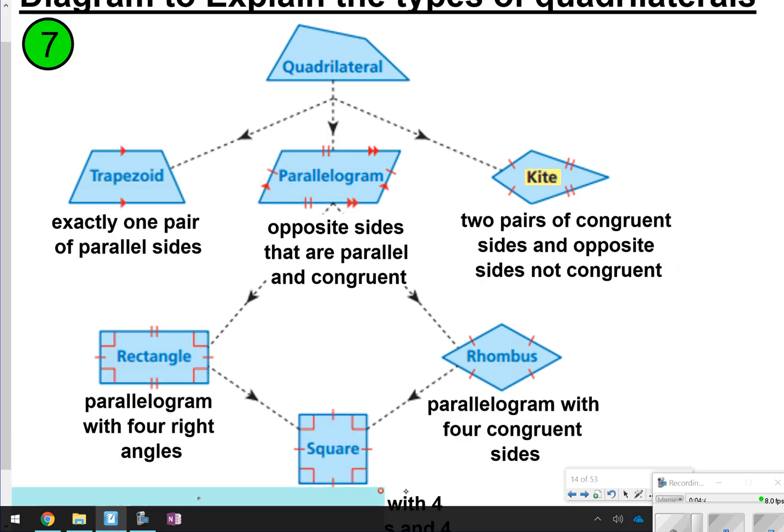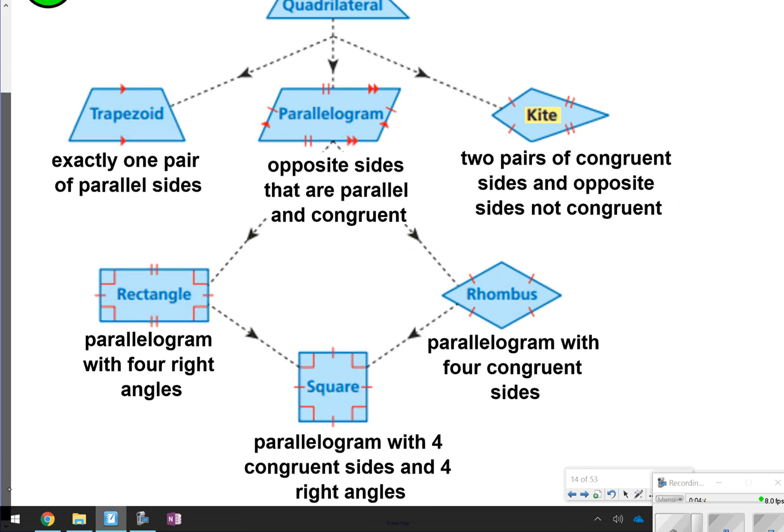Underneath parallelogram, you have three types of parallelograms. You have a rectangle, and basically a rectangle just needs to have four right angles. A square must have four right angles and four congruent sides, and a rhombus is just going to have four congruent sides.